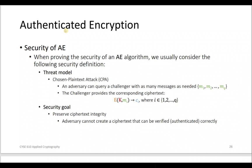The challenger replies with a ciphertext. The adversary sends M_i and receives C_i, so they form pairs M_i and C_i together. The security goal is to preserve the integrity of the ciphertext C, meaning we want to preserve its integrity.